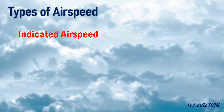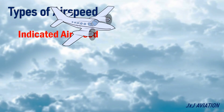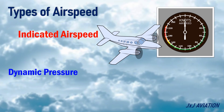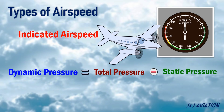Indicated airspeed. This is the speed obtained directly from the dynamic pressure. The dynamic pressure is the difference between total pressure and static pressure, and it is measured using a pitot-static tube.